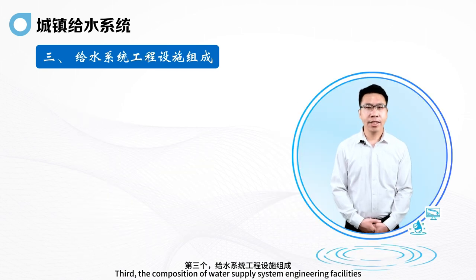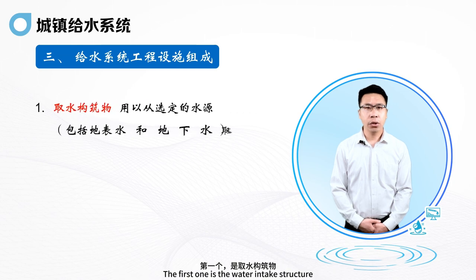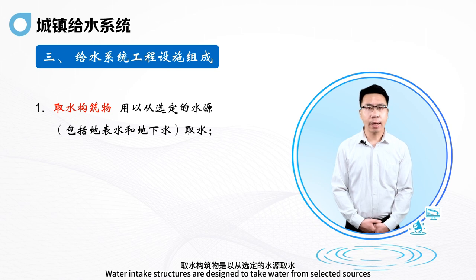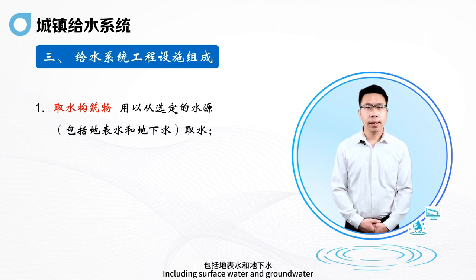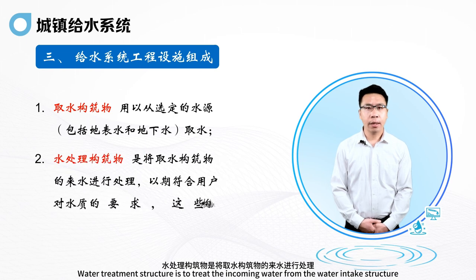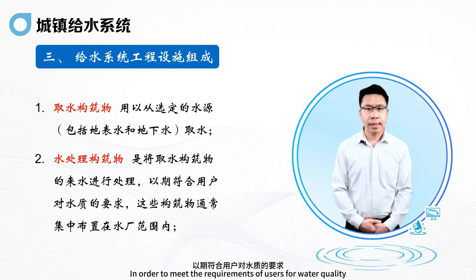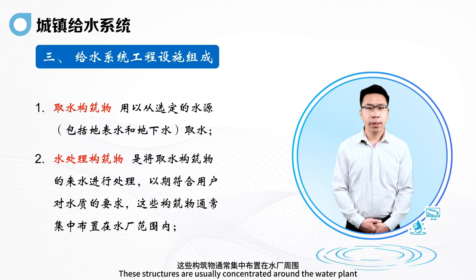Third, the composition of water supply system engineering facilities. The first is the water intake structure, designed to take water from selected sources including surface water and groundwater. The second is the water treatment structure, which treats the incoming water from the water intake structure in order to meet users' requirements for water quality. These structures are usually concentrated around the water plant.